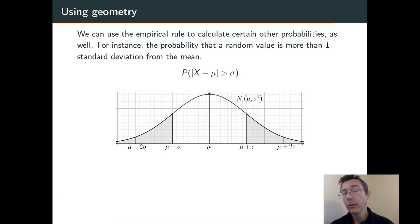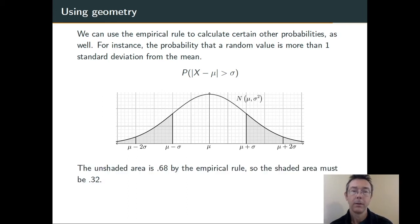Using geometry, we can use the empirical rule to calculate a few other probabilities. For example, what's the probability of randomly getting a result that's more than one standard deviation from the mean? Of course, that's exactly the opposite of getting a result that is less than one standard deviation from the mean. So, I'm going to get the probability of the shaded area by doing one minus the area of the unshaded area. So, 1 - 0.68, in other words, 0.32.